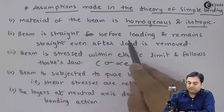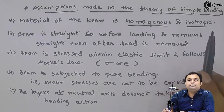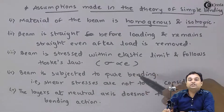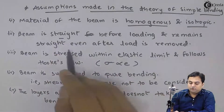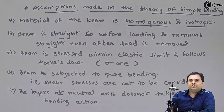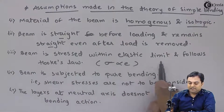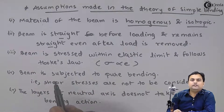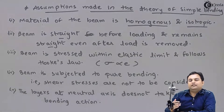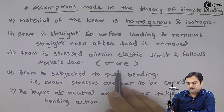The second assumption: beam is straight before loading and remains straight even after the load is removed — yaane beam ka permanent deformation nahi hai. The third assumption: beam is stressed within elastic limit and follows Hooke's law. You load the beam only up to the elastic limit; elastic limit ke bahar nahi jaana chahiye. Stress is directly proportional to strain — this is Hooke's law.